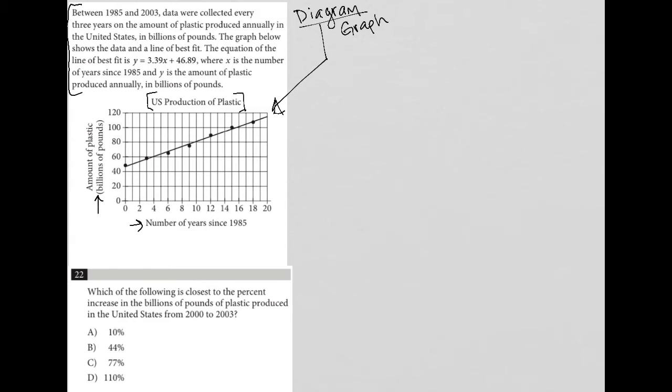The most important thing is that this line of best fit that connects these points has an equation that is y equals 3.39x plus 46.89.